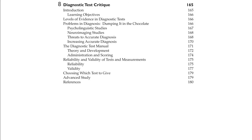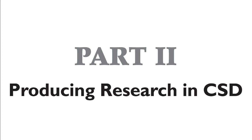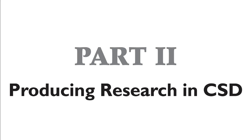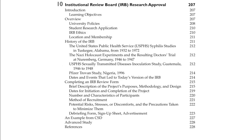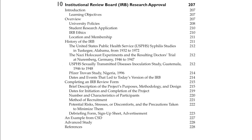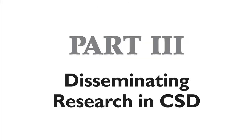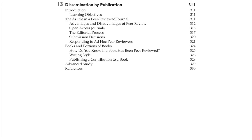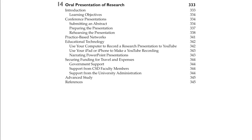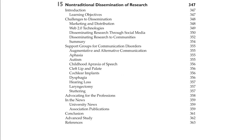Part two on the doing of research includes chapters on mentoring, getting approval from an institutional review board, doing clinical research, and conducting academic research. In part three on disseminating research, there are three chapters on publication, oral presentation, and non-traditional types of dissemination.